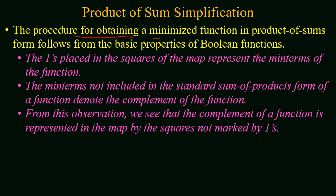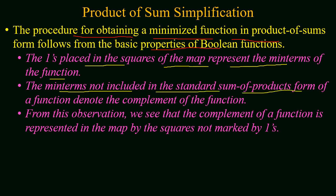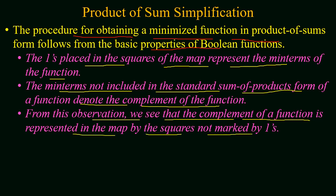The procedure for obtaining a minimized function in the product of sum form follows the basic properties of the boolean function. The ones placed in the squares of a map represent the minterms of the function. The minterms not included in the standard sum of product form represent the complement of the function. The complement of a function is represented in the map by the squares not marked by ones. A function can have a value of one or zero — all those binary combinations for which the function has a value of one are represented by minterms and marked by ones in the map, and all remaining squares represent the complement of the function or have a value of zero.